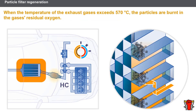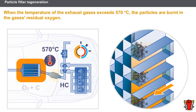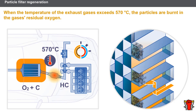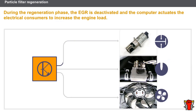These unburnt elements are treated inside the oxidation catalyst, generating a large amount of heat. When the temperature of the exhaust gases exceeds 570 degrees Celsius, the particles are burnt in the gas's residual oxygen. During this regeneration phase, the EGR is deactivated. In fact, the EGR lowers the combustion temperature, which does not help the regeneration process.